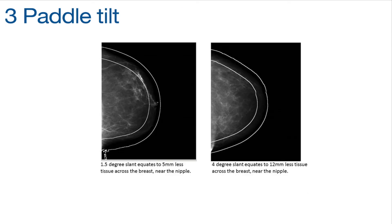Paddle tilt is also reported in Volpara Analytics. In another case, it identified a unit with a tilting paddle that reported 30% more pressure than other units, resulting in a 4-degree tilt angle while others were 2 degrees. By standardising the pressure, patient experience and image quality variability were reduced.